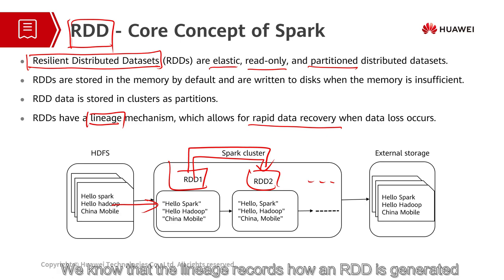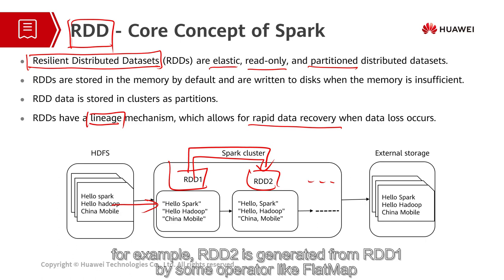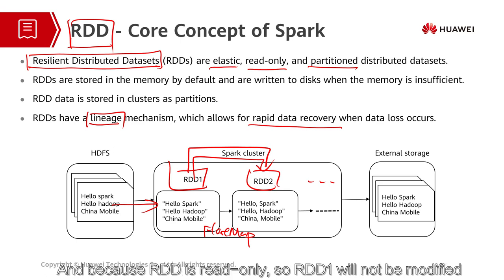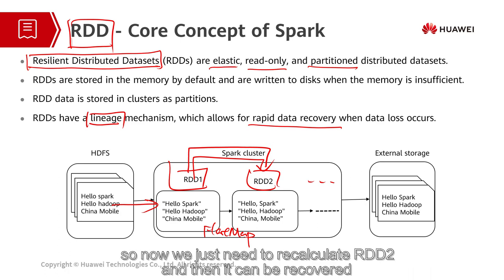But how to do rapid data recovery based on this lineage mechanism? We know that the lineage records how an RDD is generated. For example, RDD2 is generated from RDD1 by some operator like a flat map. And so if RDD2 is lost, we can turn to RDD1 for help. And because RDD is read-only, so RDD1 will not be modified. So now we just need to recalculate RDD2, and then it can be recovered.